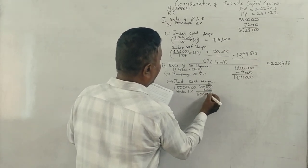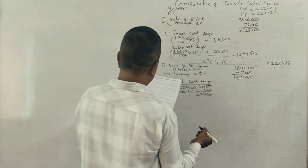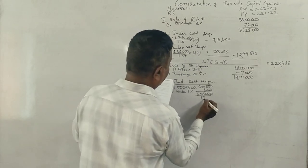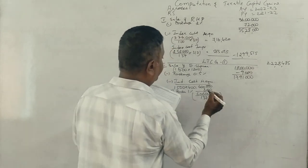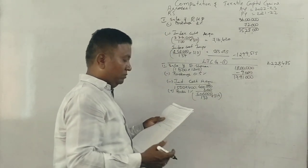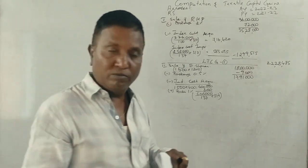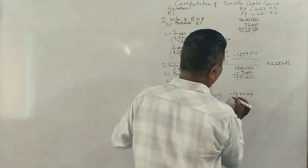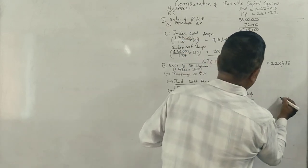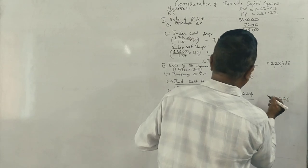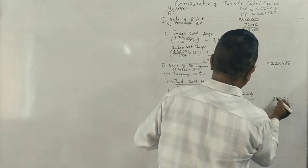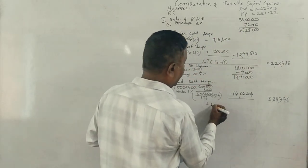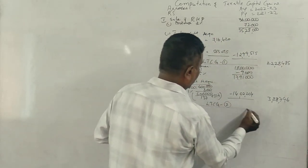For the equity shares calculation, we need to apply the cost inflation index. After indexation calculations, the long term capital gain number 2 comes to 3,88,796.